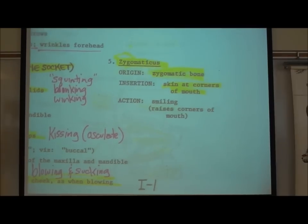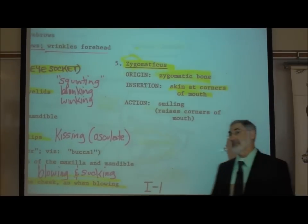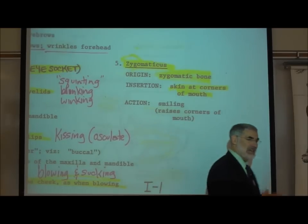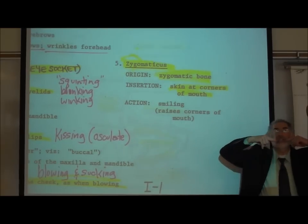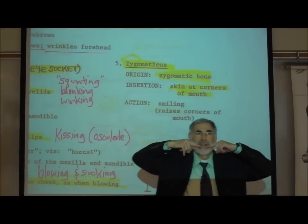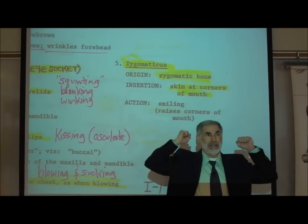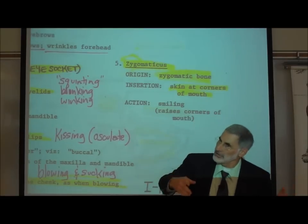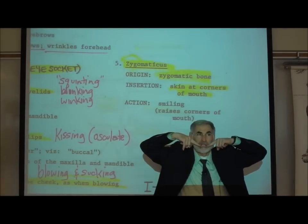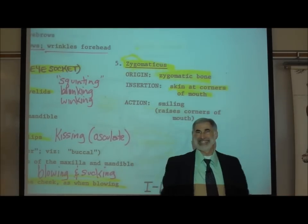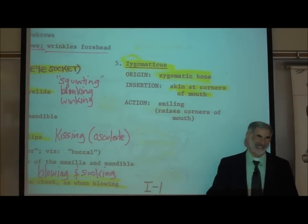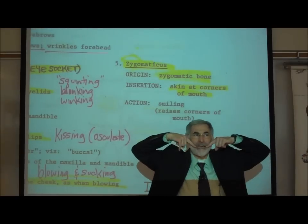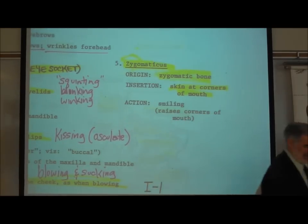The zygomaticus sounds like it might have something to do with the zygomatic or cheekbone — and it does. It originates on the zygomatic bone and inserts right at the corners of the mouth. Every muscle pulls the insertion towards the origin, so it pulls the corners of your mouth upwards. This is the smiling muscle. Take a look at page I3.